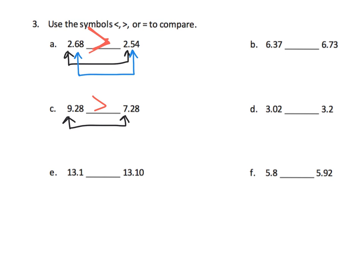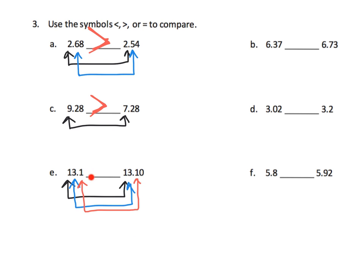We can immediately know that 9.28 is larger than 7.28. Now let's do this one: one ten versus one ten — tied. Then the ones place: three ones versus three ones — still tied. Then the tenths place: one tenth versus one tenth — still tied. Then this one has no hundredths — and what about this one? He has no hundredths either, because they didn't even write it down.